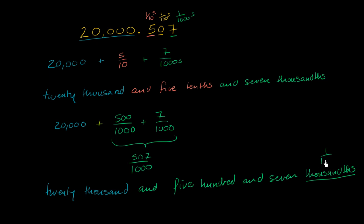This is 1 over a thousand. While this right over here, thousand of course, actually represents 1,000. So we've got 20,000, that's that right over there, and 507 thousandths.